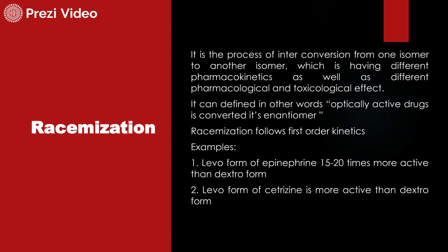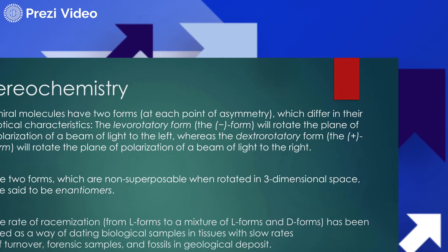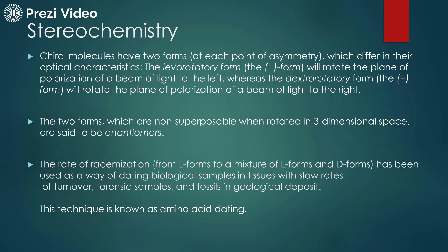As we have studied in stereochemistry, chiral molecules are substances which are not superimposable — they differ in their optical characteristics. When we take the plane of polarization of light, the levorotatory form will rotate the plane of polarization of light to the left. This form is known as the L form.